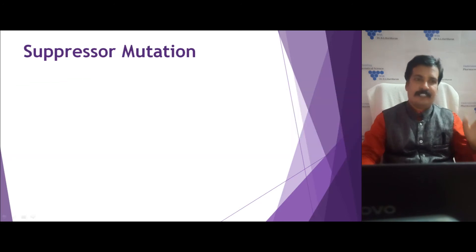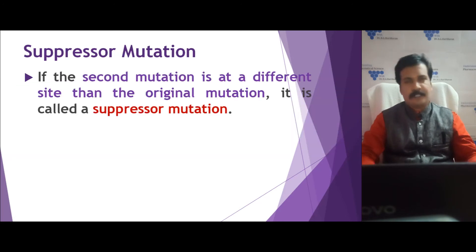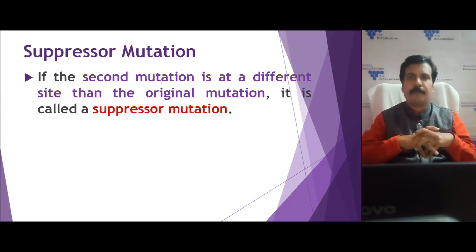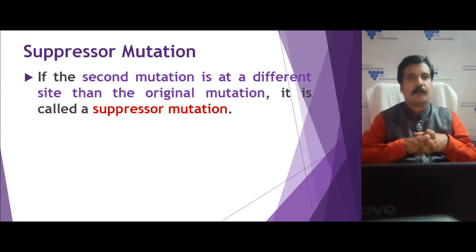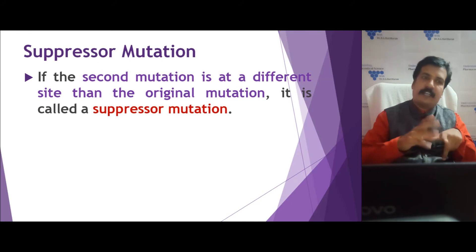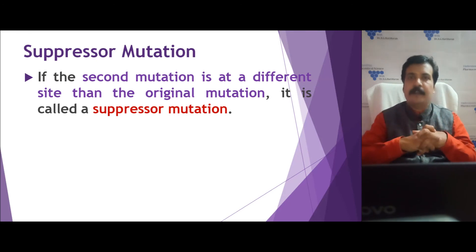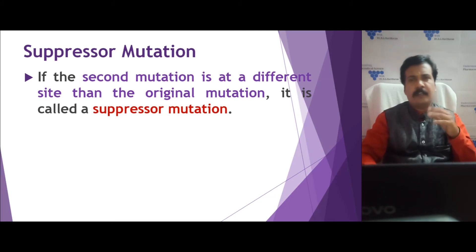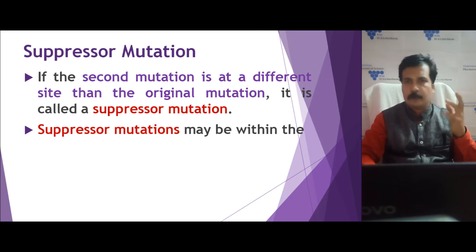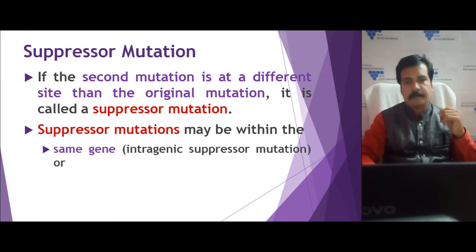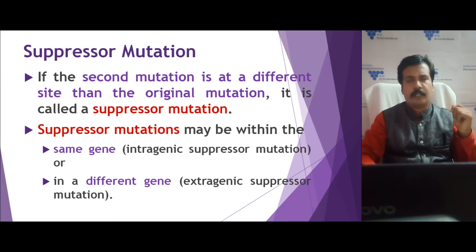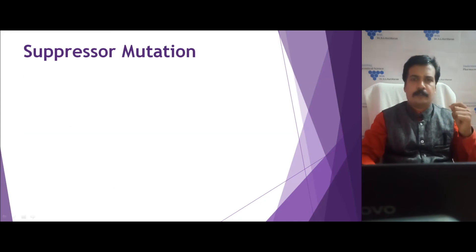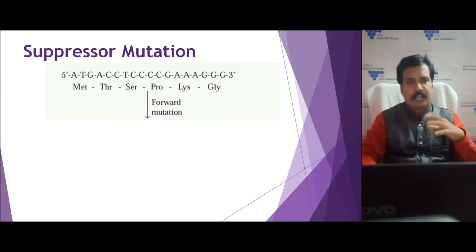The third type is suppressor mutation. Suppressor mutation is a part of reversion mutation but is treated separately because the second mutation does not occur at the original mutation location — it occurs at a different location but suppresses the mutation's further effect. Suppressor mutation can occur at two locations: within the same gene, called intragenic suppressor mutation, or in a different gene, called extragenic suppressor mutation.